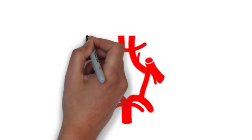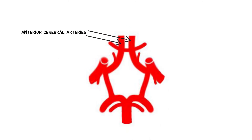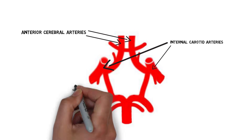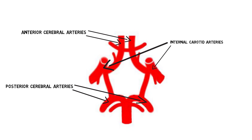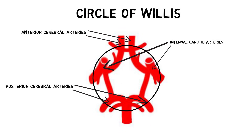The anterior cerebral, internal carotid, and posterior cerebral arteries of both sides of the brain are all connected, forming what is known as the circle of Willis. This interconnection can allow blood flow to continue if a major vessel is blocked on one side of the brain.